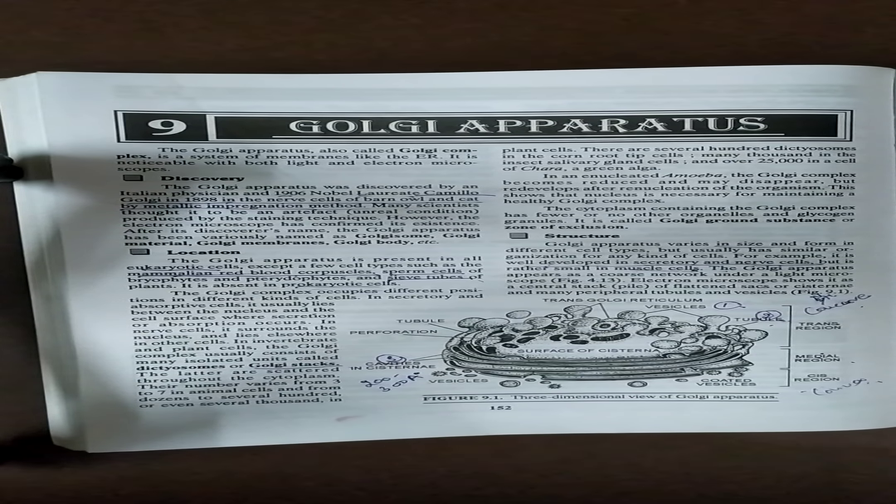So these three structures, cisternae, tubules and vesicles form the Golgi body. Next, origin of the chemical composition of the Golgi body.